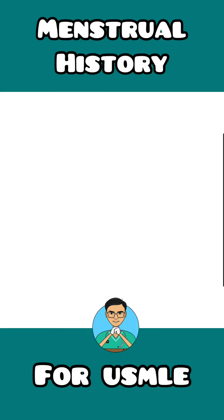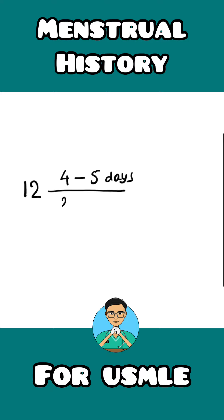In this video, let us learn how quickly we can take menstrual history of a girl. When we take menstrual history for our clinical notes while giving ward rounds, we use this simple style. First, we write the age of menarche of the female, then we write the duration of the bleeding phase — that is maybe four to five days. Below that, we write the frequency of every cycle, that is maybe 28 to 30 days.